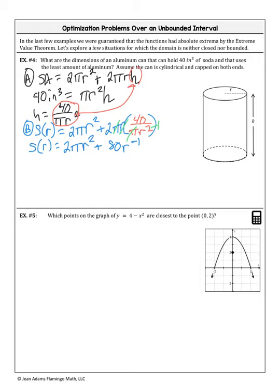Part c: find the derivative. S′(r) = 4πr − 80r⁻², which can also be written as 4πr − 80/r². Part d: set the derivative equal to zero: 4πr = 80/r². Cross-multiplying gives 4πr³ = 80, so r³ = 20/π. Taking the cube root of both sides: r = ∛(20/π) ≈ 1.853. This is our critical value.